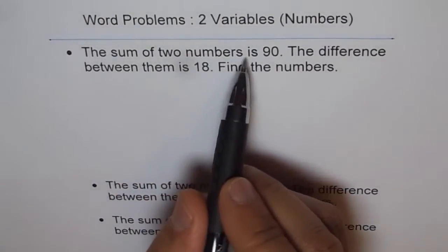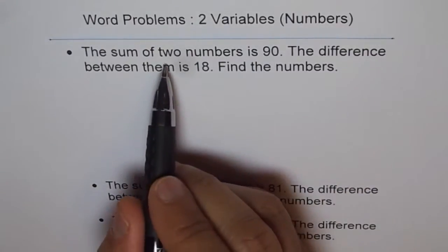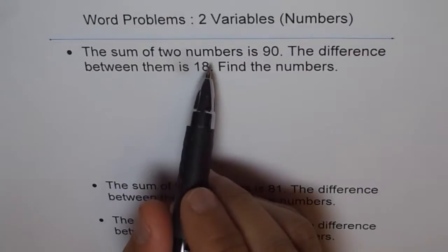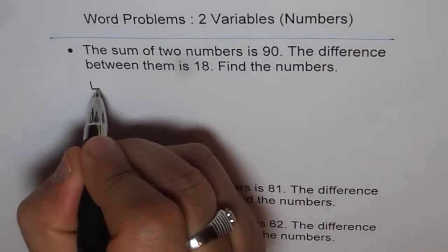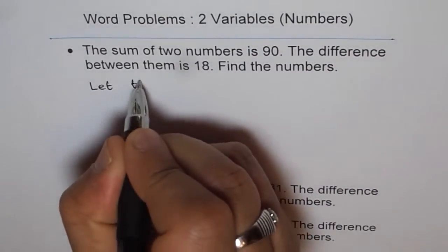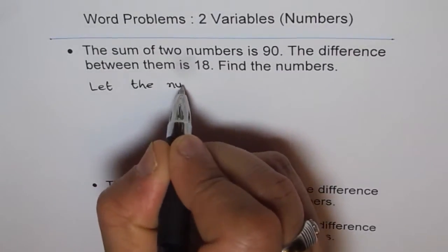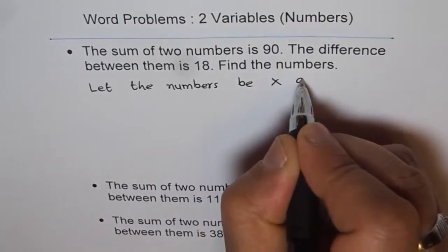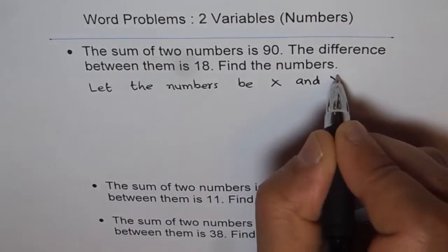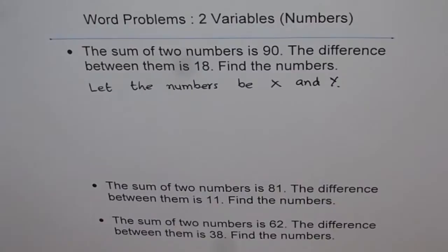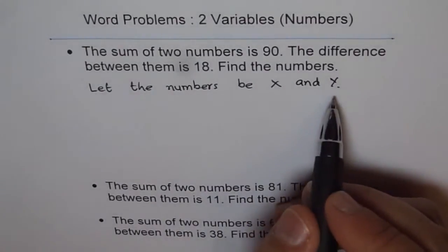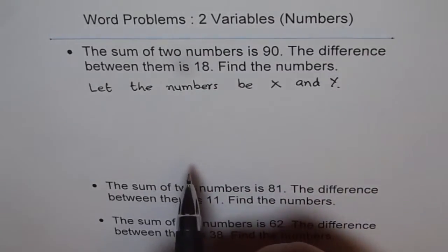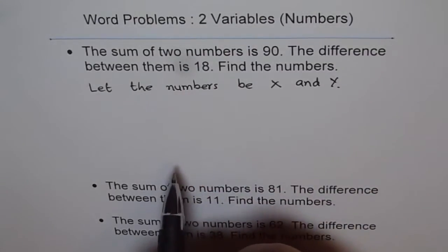The sum of two numbers is 90. When you say two numbers, that means there are two variables we don't know. So we say: let the numbers be X and Y. That is the first statement — always define your variables with a let statement. Now read the problem to find the relation between these two numbers.